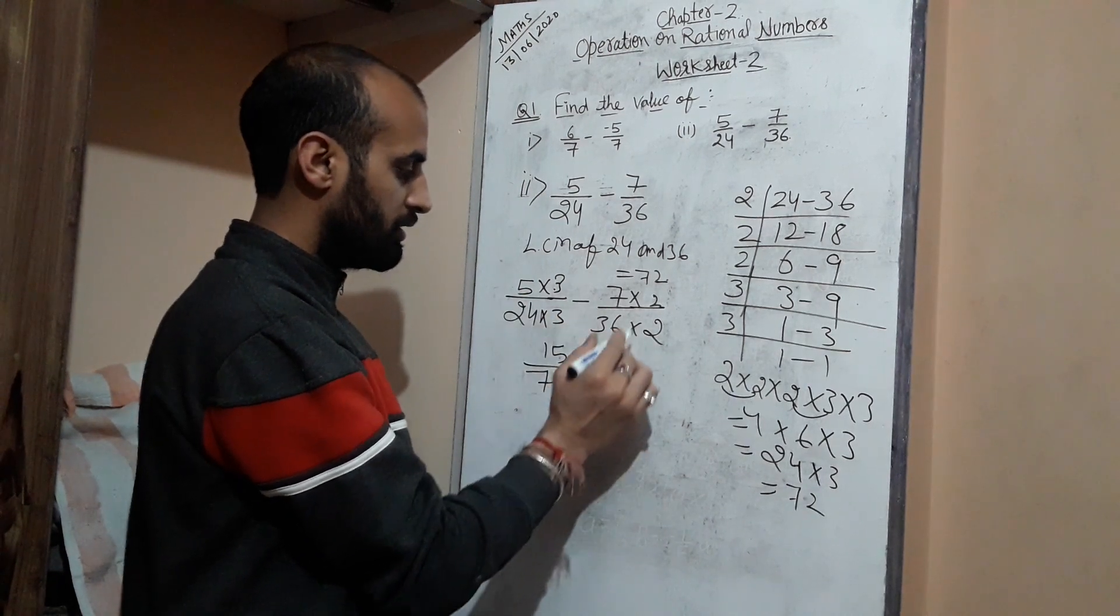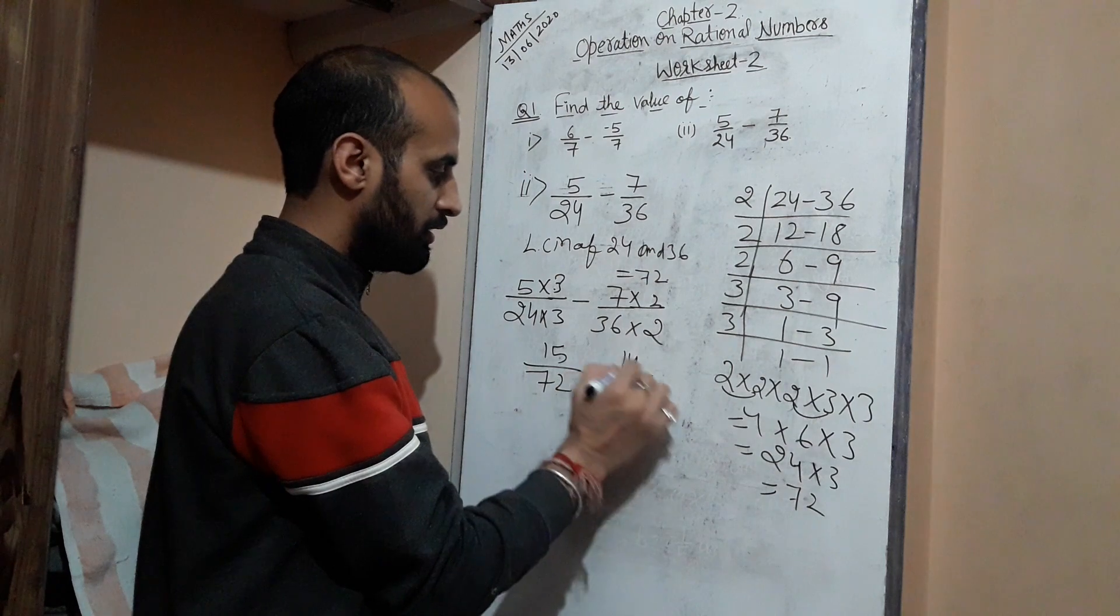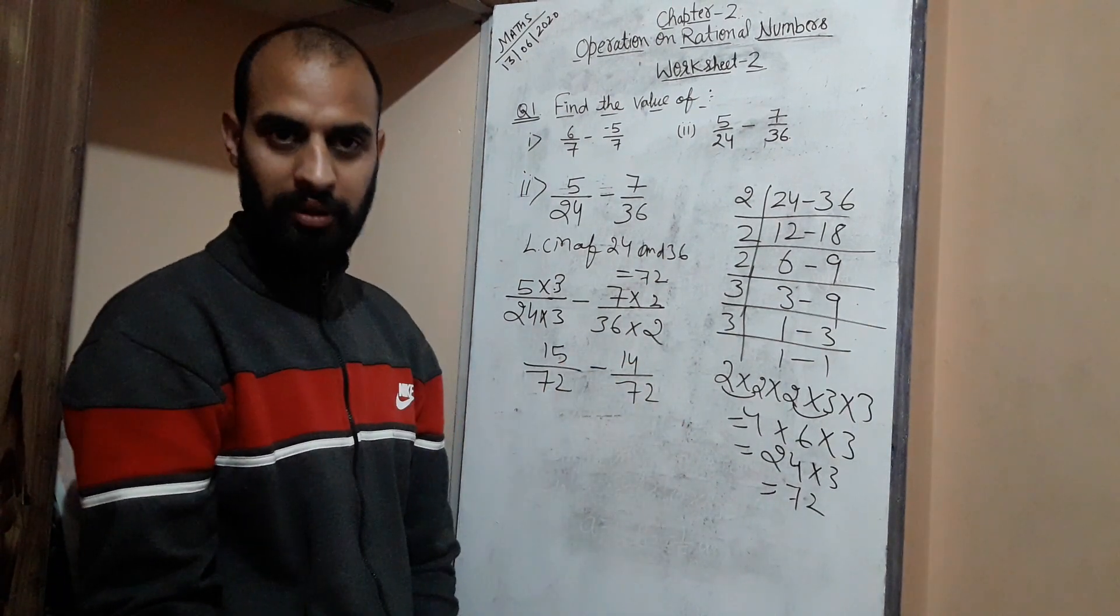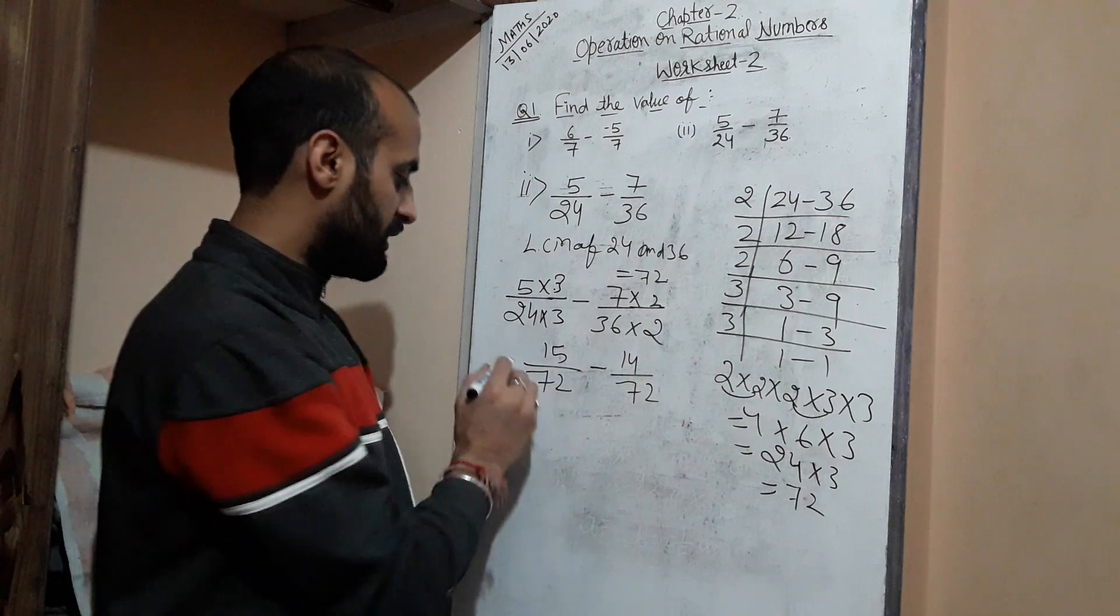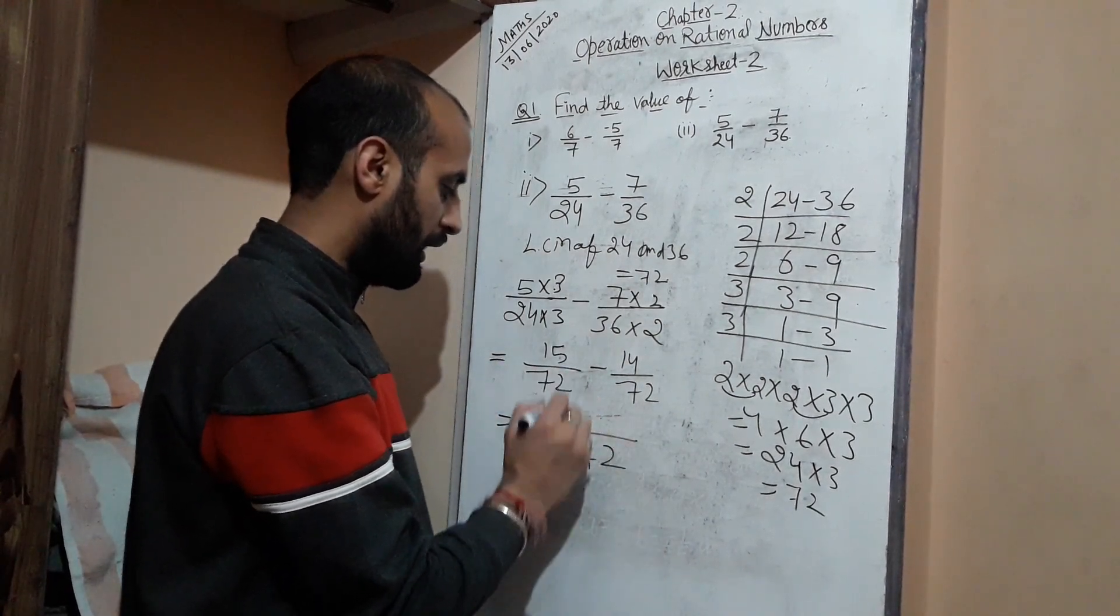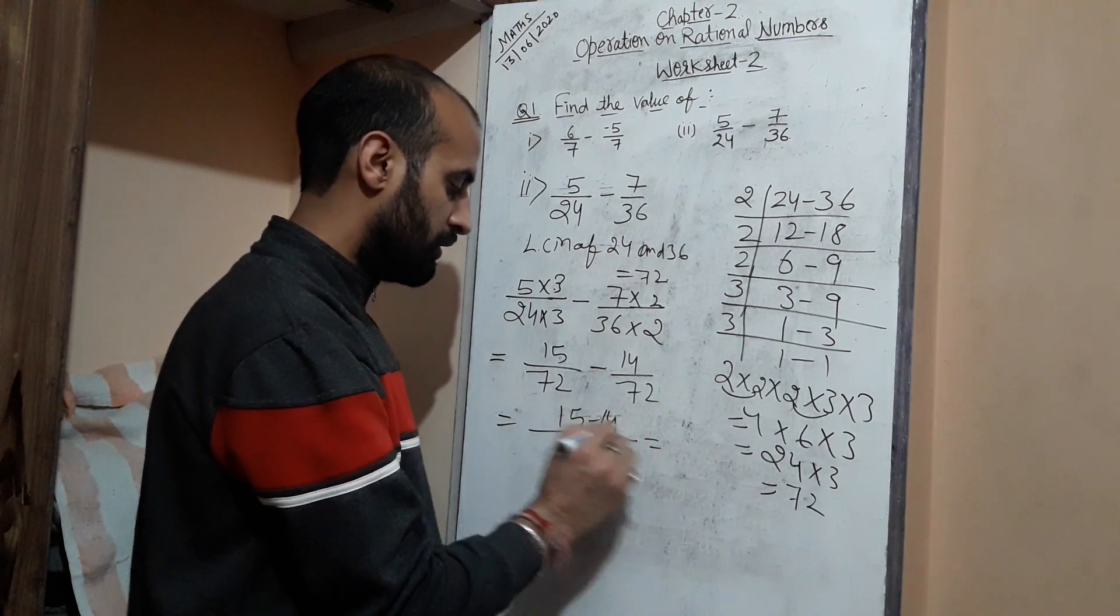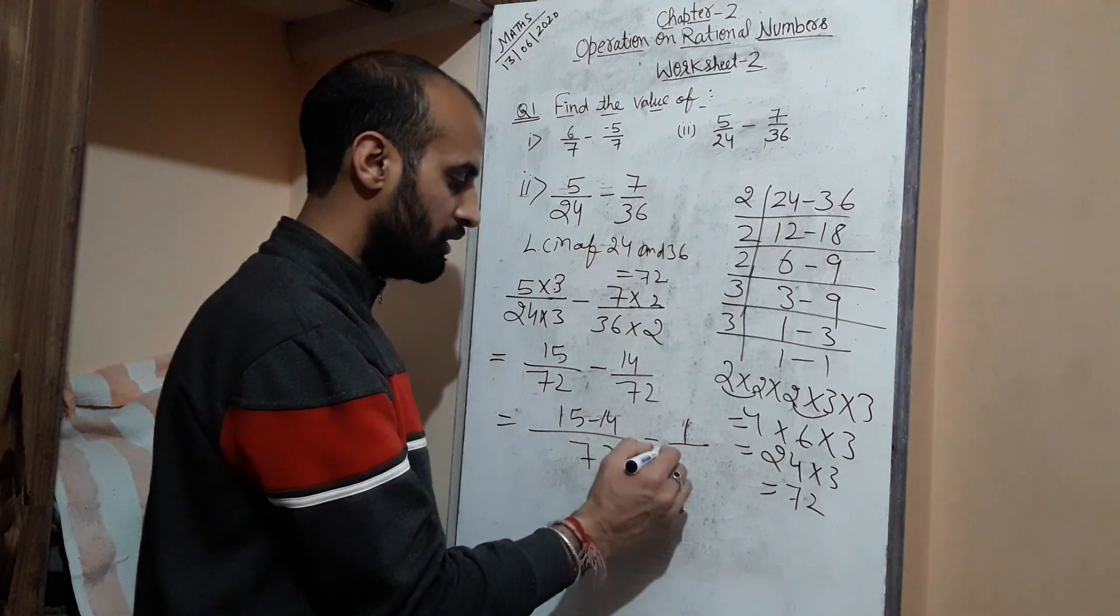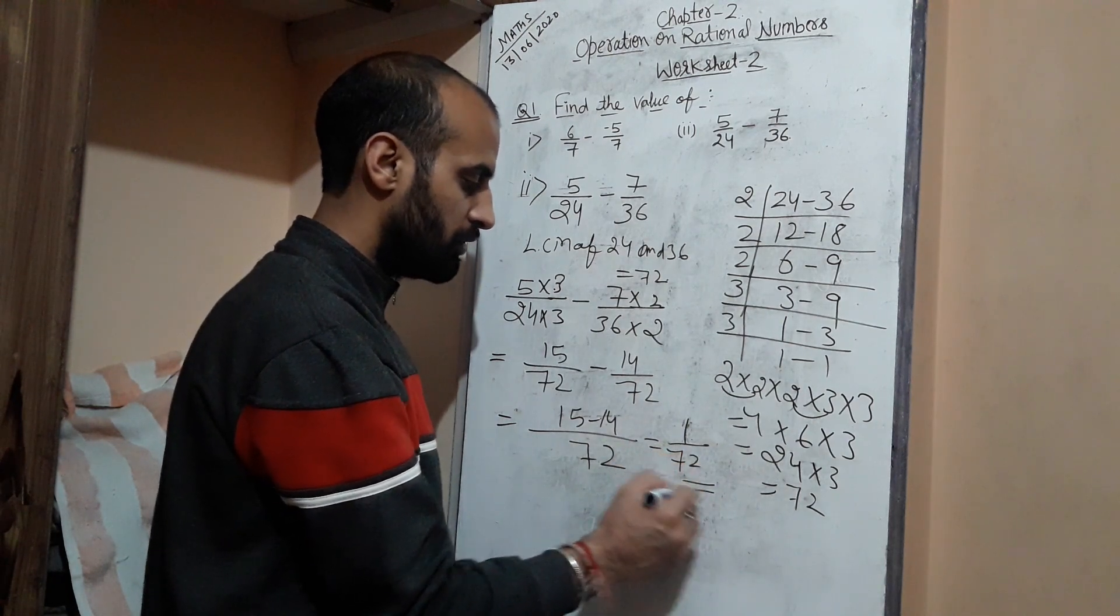5×3 is 15. Here, 72. 7×2 is 14. And now it is 72. Now after making the denominator the same, the next step is similar: write the common denominator, that is 72, and subtract the numerators: 15 - 14 = 1. So 1/72 is your answer.